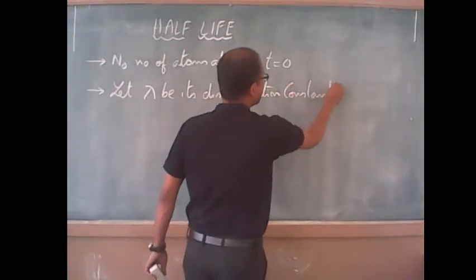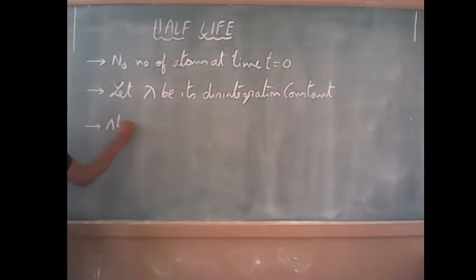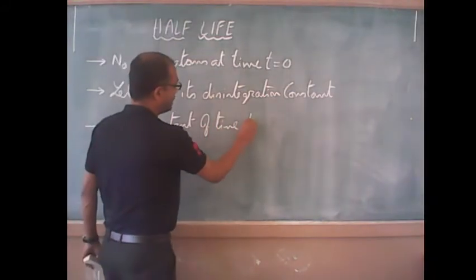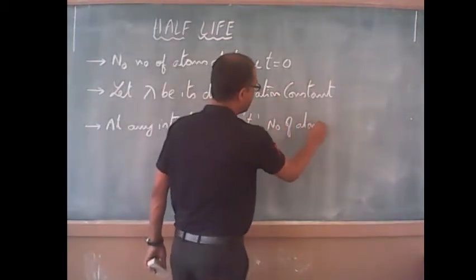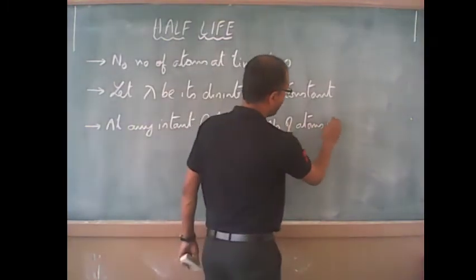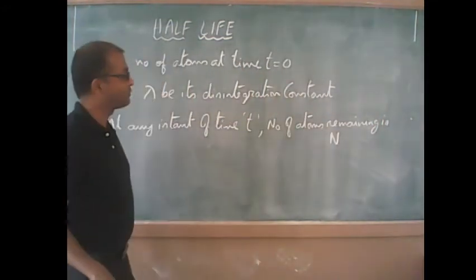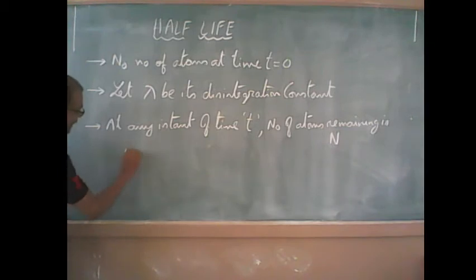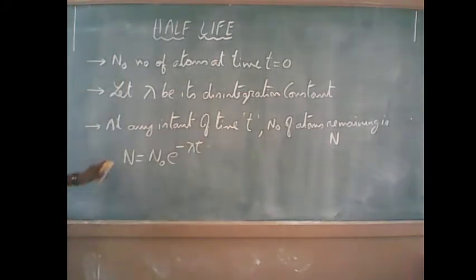This radioactive substance will disintegrate with time, so the number of atoms will keep on decreasing with time. At any instant of time t, the number of atoms remaining — that is, the number of atoms still to undergo disintegration — is n. As per Rutherford's law of radioactive disintegration, n is related to n₀ by the expression n equals n₀ e to the power minus lambda t, where lambda is the disintegration constant.